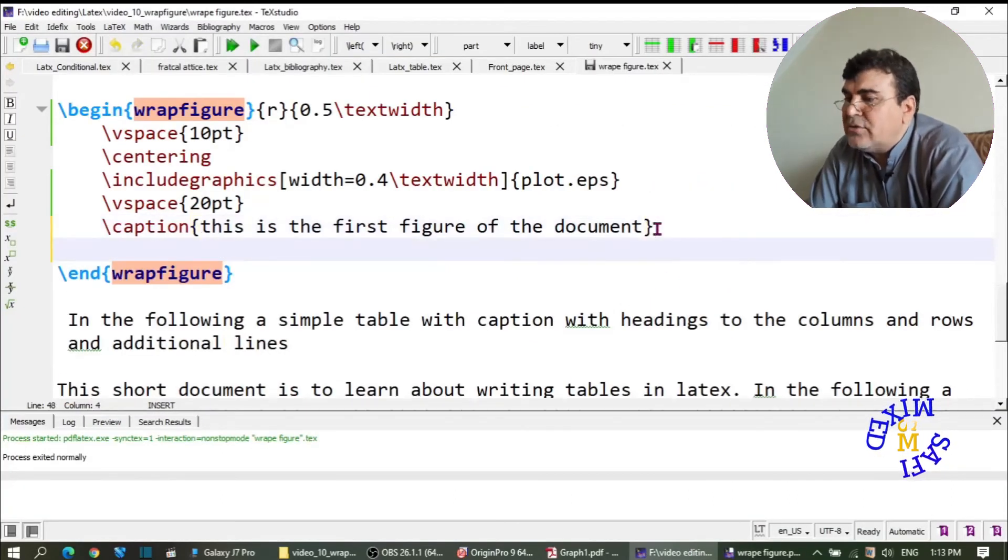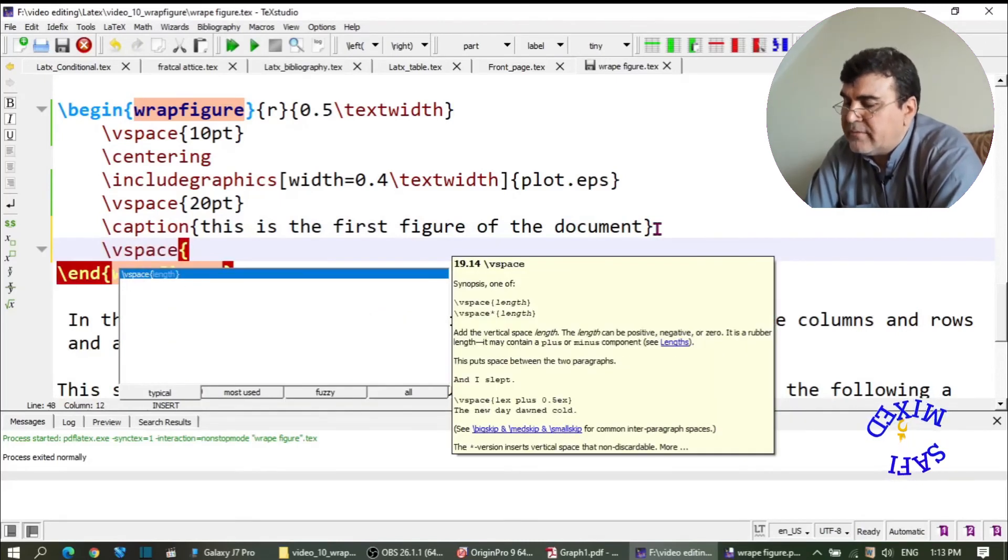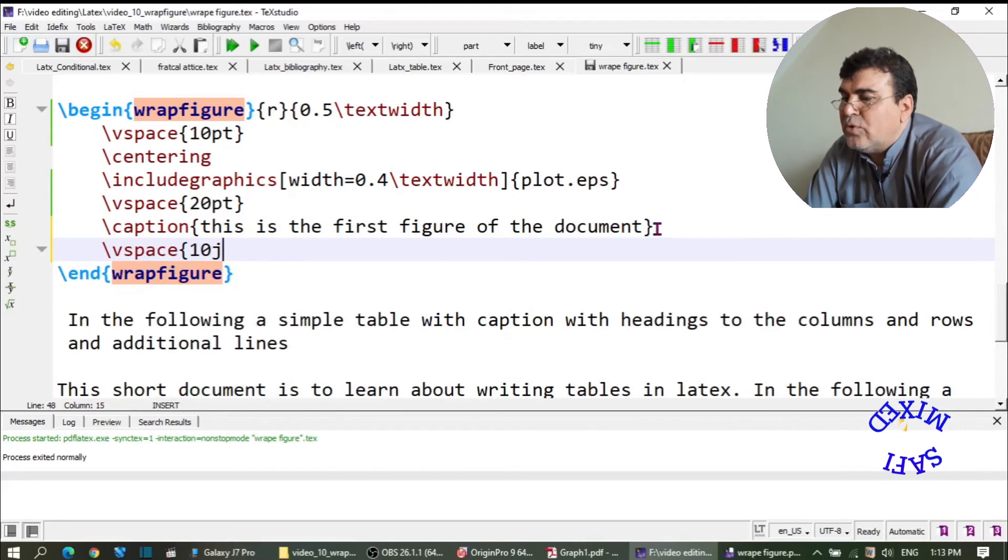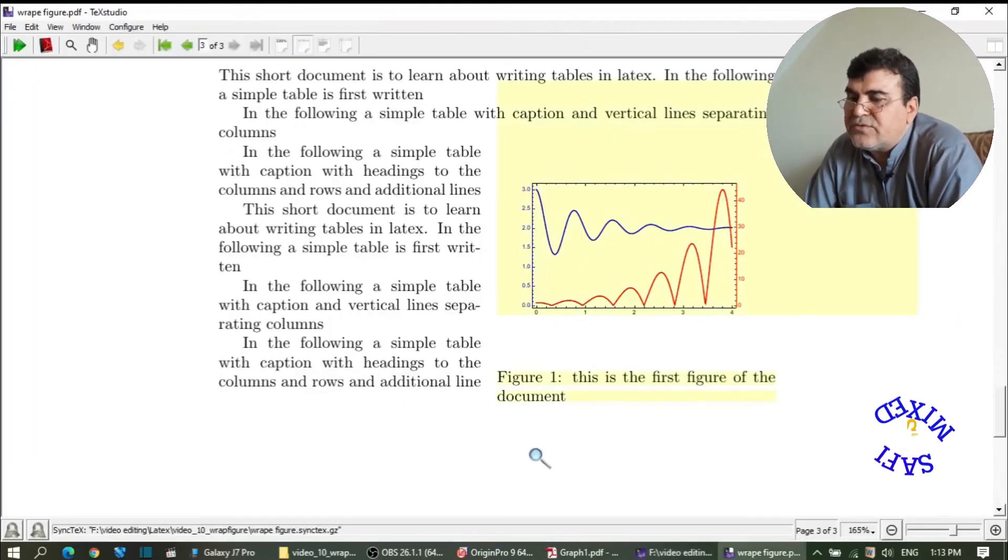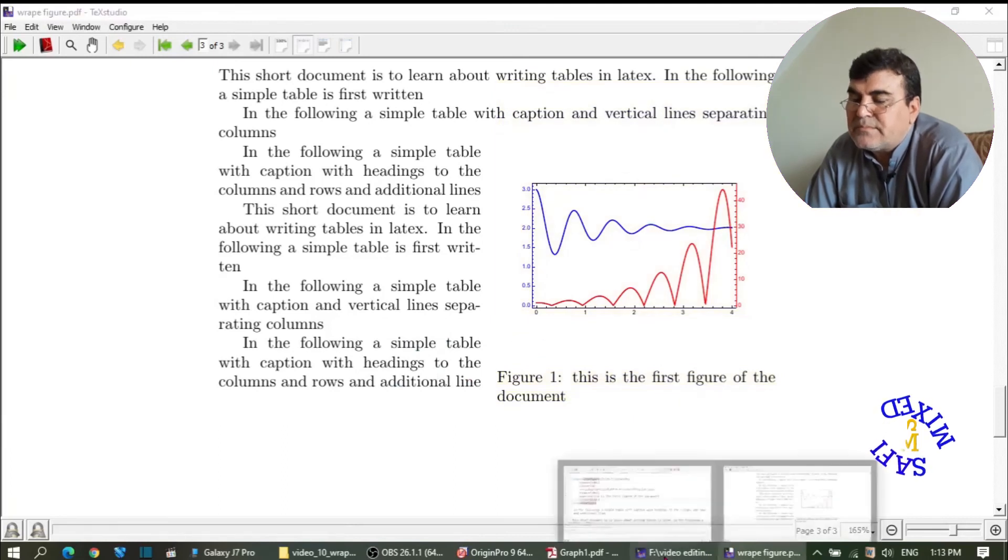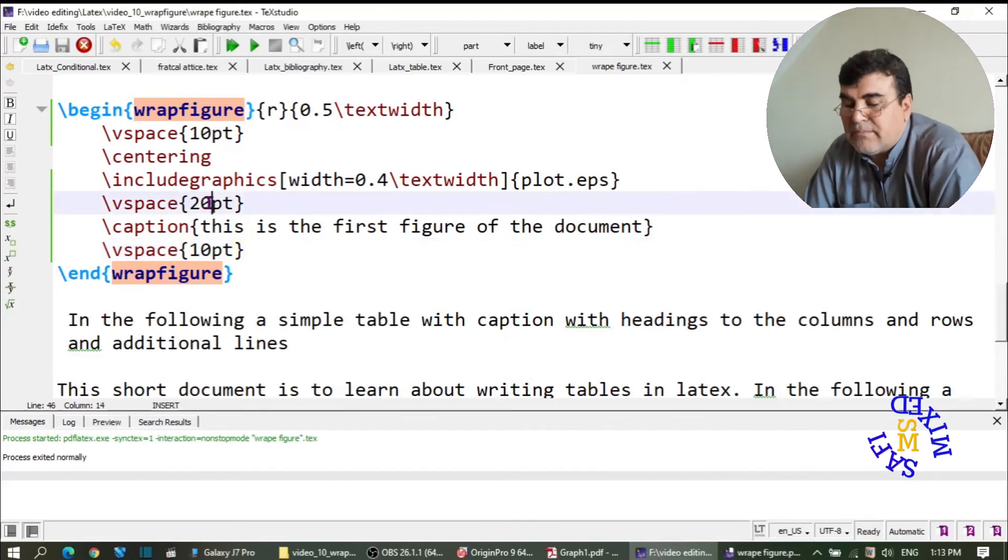and if I add another vertical space below the caption - here I am adding 10 points - then this space will be increased. Here is, let me make this minus 5